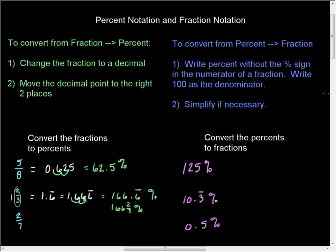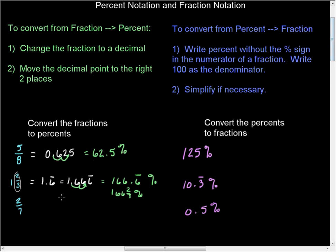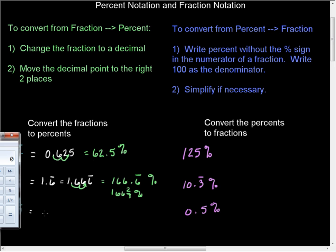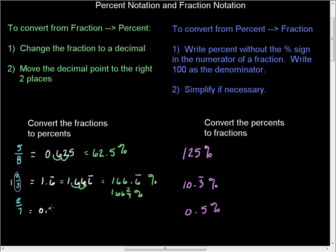For this final example, I need to use the calculator because I don't remember exactly what the decimal expansion for 2 sevenths is. I'm going to put in 2 divided by 7, and that gives me 0.285714. That whole sequence gets repeated.